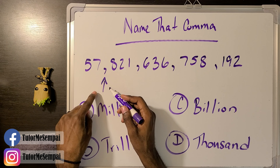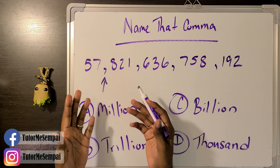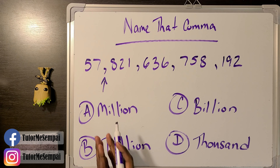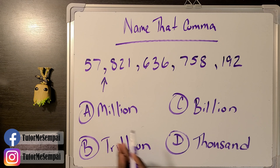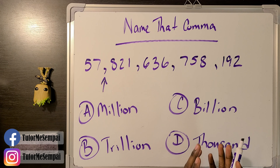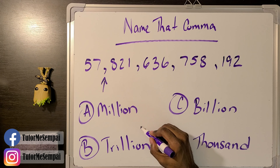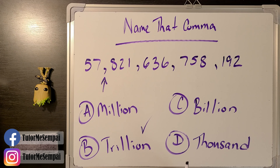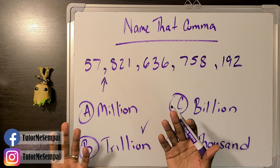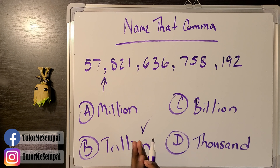How about this comma right here? What's going to be the name of this comma? Is it going to be A, million; B, trillion; C, billion; or D, thousand? If you said B, trillion, that would be correct. This is your trillion comma.